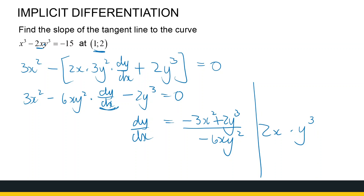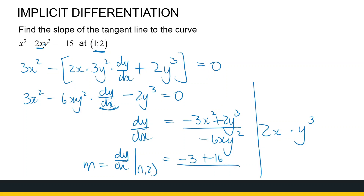We want the gradient of the tangent line, which is dy/dx evaluated at the point (1, 2). Substituting x = 1, y = 2: the numerator gives −3 + 16 = 13 (since 2·2³ = 16), and the denominator is −6 · 1 · 4 = −24. So the slope is 13/(−24), which is −13/24.